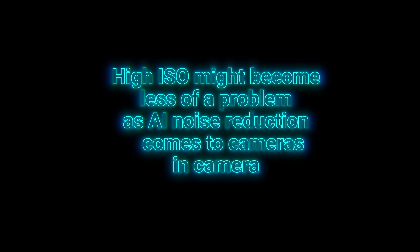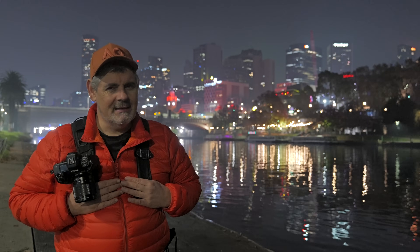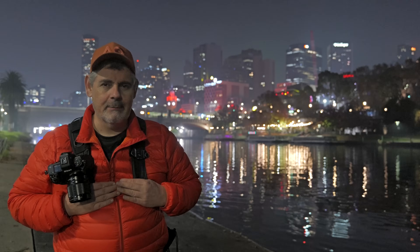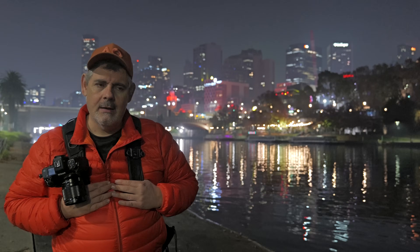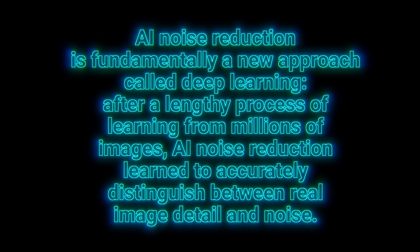We're now moving into an interesting time where ISO might get way more powerful because we can go higher and AI noise reduction is being applied — and this may start to happen in camera. With cameras like the ZF and the new XPEED 7 processor, Nikon is stating that there is noise reduction happening within camera. That means it's computational, with more processing power thinking about what to do with that grain. AI is the next step, where it's analysing it in a different way.